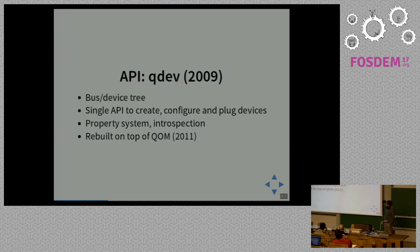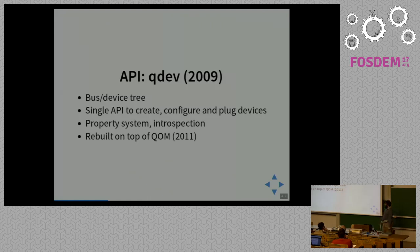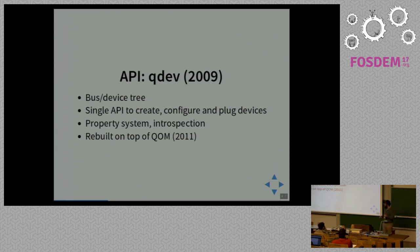The next API I'll talk about is QDEV. QDEV is the bus and device tree hierarchy system inside QEMU. It allows us to provide a generic external and internal interface to create, configure, and plug devices in QEMU, instead of having different APIs or different command line options for each device type. It has a property system that allows configuration and introspection of devices. QDEV was introduced in 2009, but when QOM was introduced later, the QDEV abstractions were basically rebuilt on top of QOM.